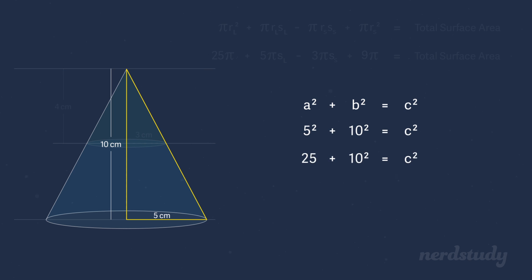5 squared is 25 plus 10 squared, which is 100, equals c squared. When we add 25 and 100, we get 125 equals c squared. Let's square root both sides to get square root 125 equals c. So the slant height for the large cone is square root of 125.